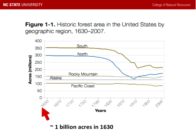Beginning in approximately 1630, the United States had about one billion acres of forest land. The country was under a lot of forest cover back then. As we began to settle and move across the United States, for about the first 200 years there wasn't much European settlement movement. But as that began to pick up in the late 1700s and into the 1800s, we started to see a drop in forest cover, mostly in the southern, northern, and eastern parts of the United States.